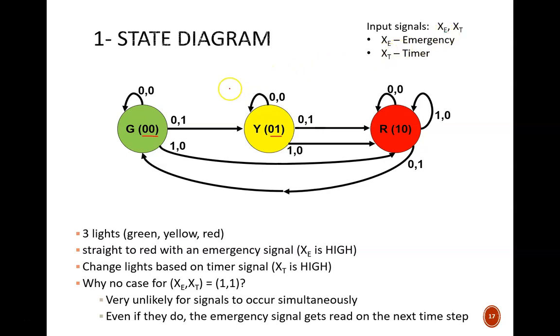In the case where neither input is active, the arrows loop back on the current state. Green stays at green, yellow stays at yellow, red stays at red. These would be the most commonly used arrows, right? A stoplight would make a quick change to green, and then wait there for several seconds, which might be several thousand clock cycles, depending on the clock frequency.